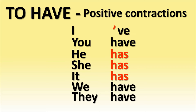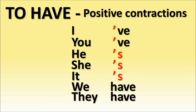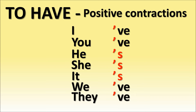To have — positive contractions: I've, you've, he's, she's, it's, we've, they've.